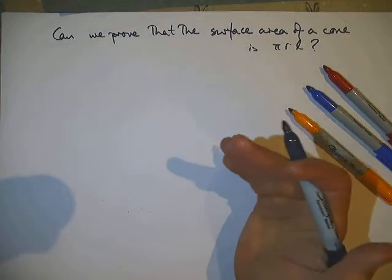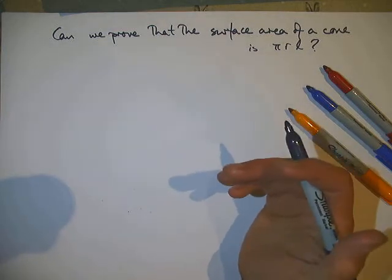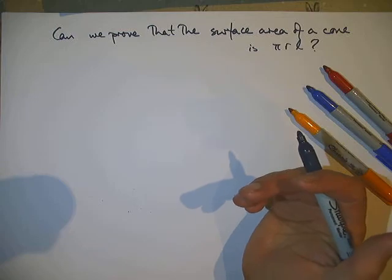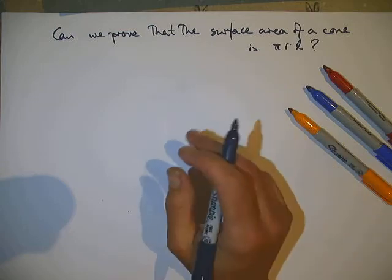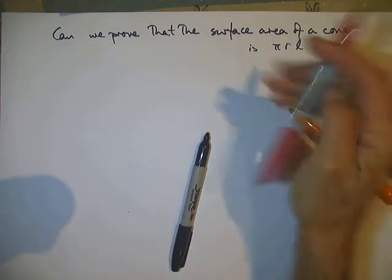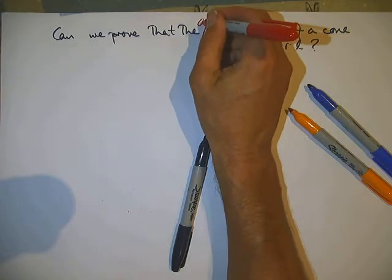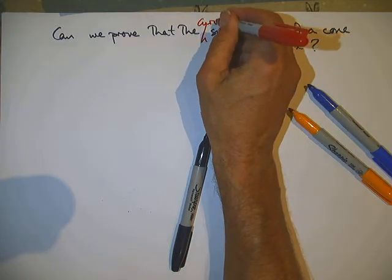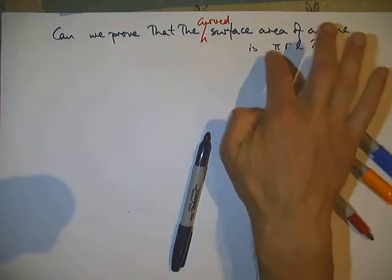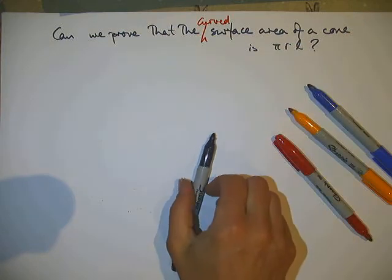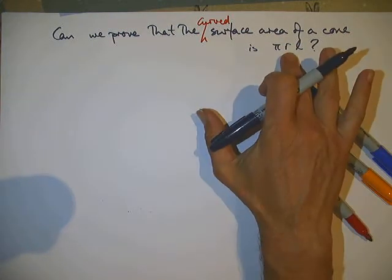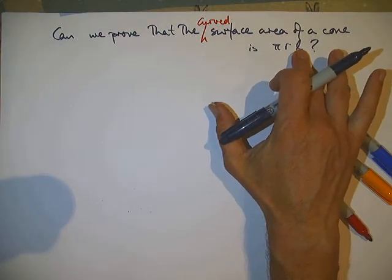Right, from today's lesson — Thursday's lesson, the last lesson of this week — you get a result that the curved surface area of a cone is πRL. Can we prove that, where R is the radius and L is the slant height?